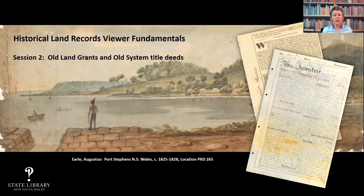The first dataset is the register of land grants and leases, sometimes known as the grant register, covering early Crown land grants from 1792 right through to 1862. The other is the general register of deeds, which covers land that was privately transacted between individuals from 1825 right up to 1992 on the HLRV.